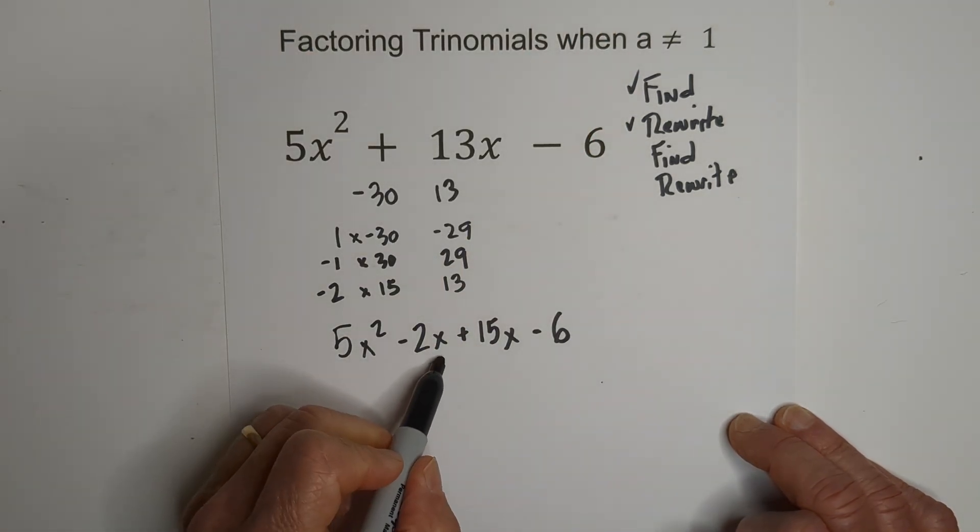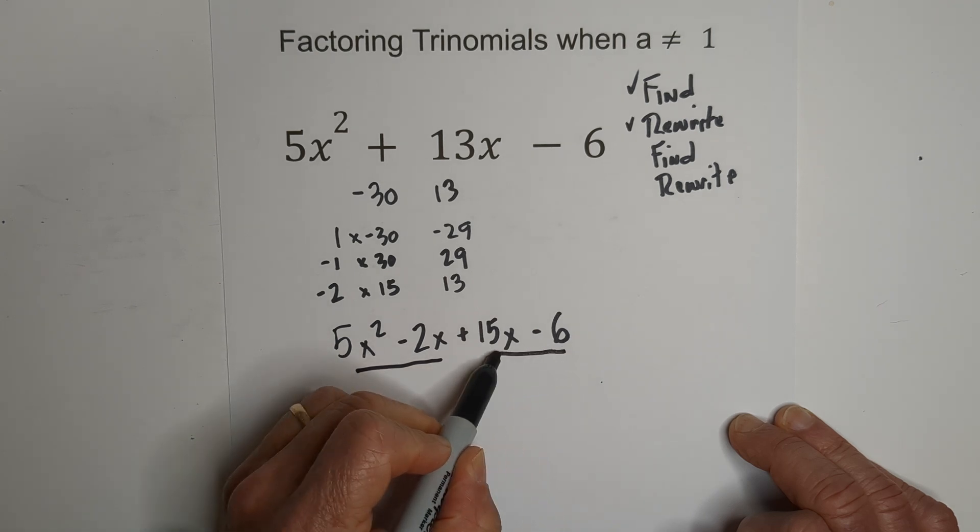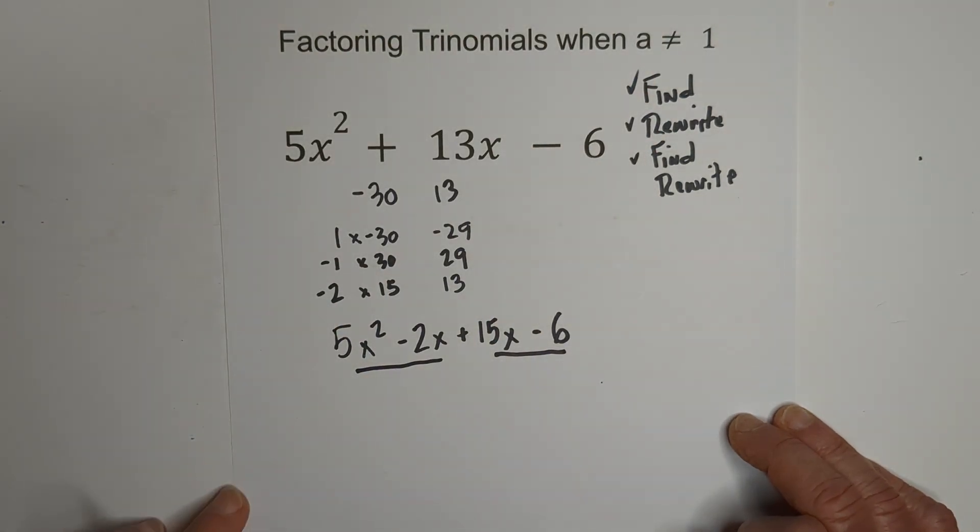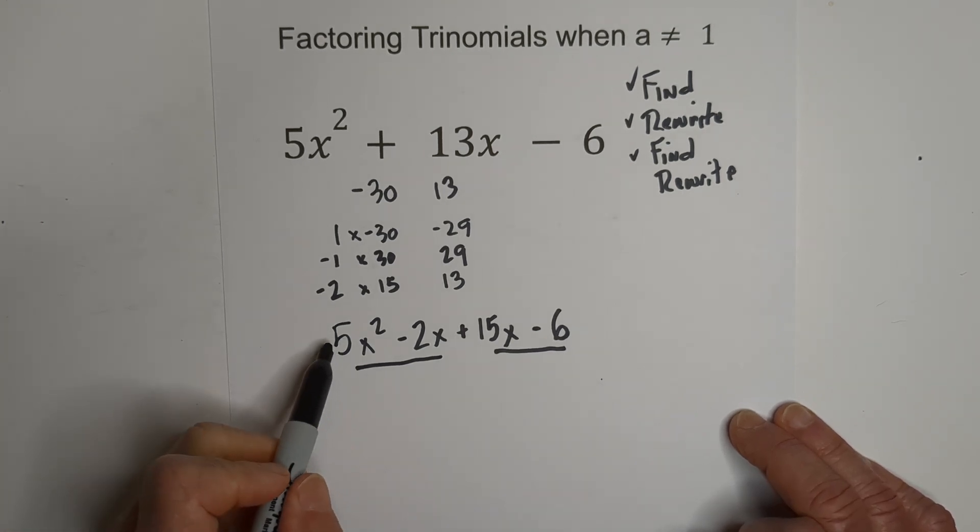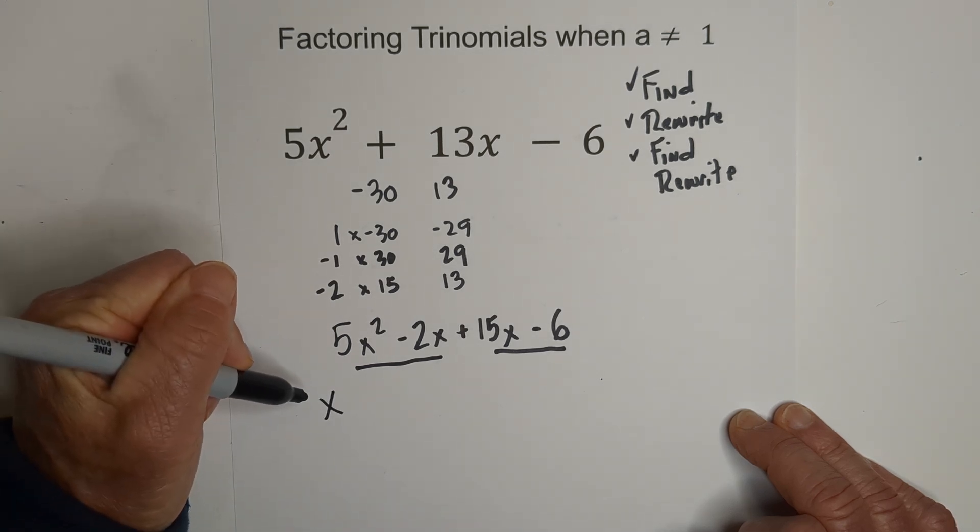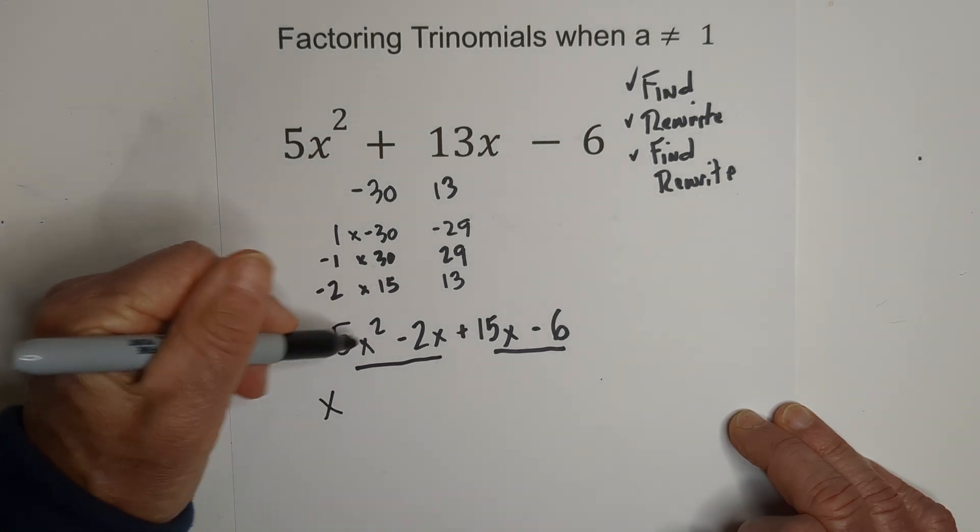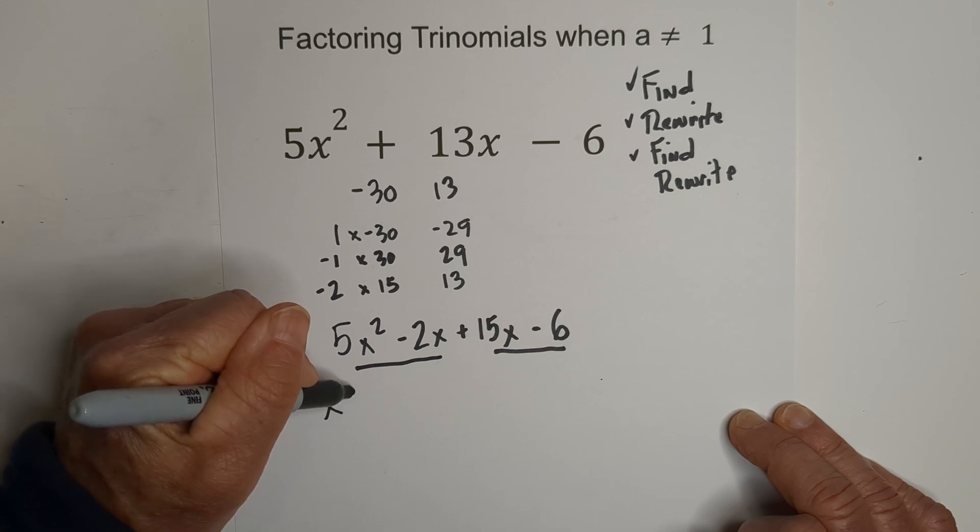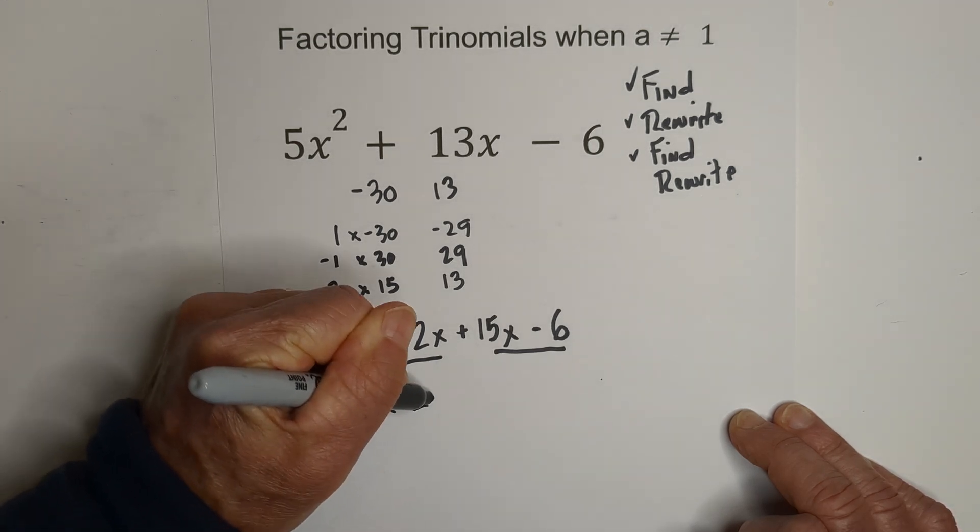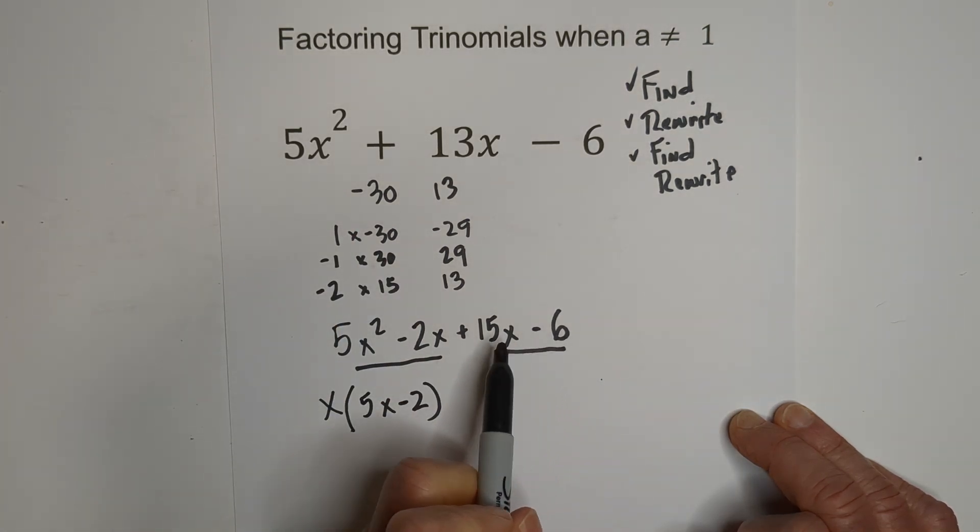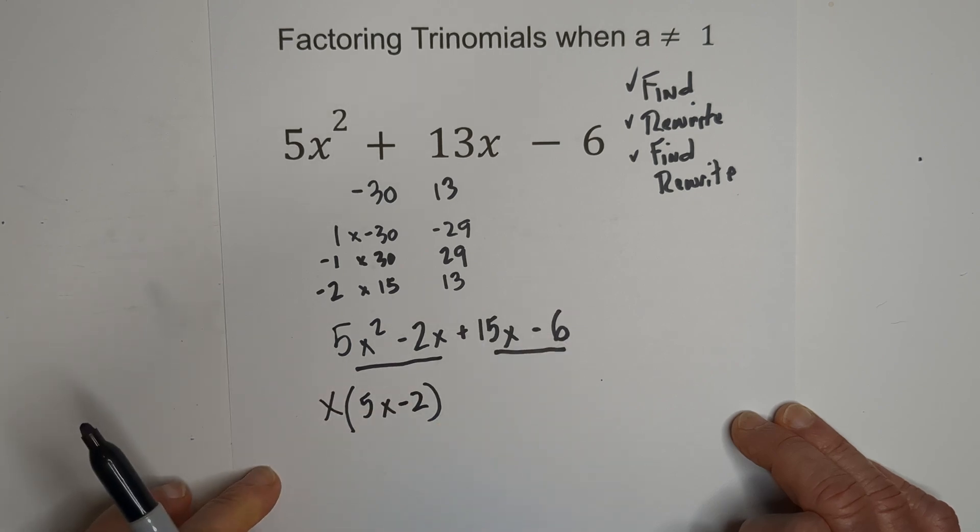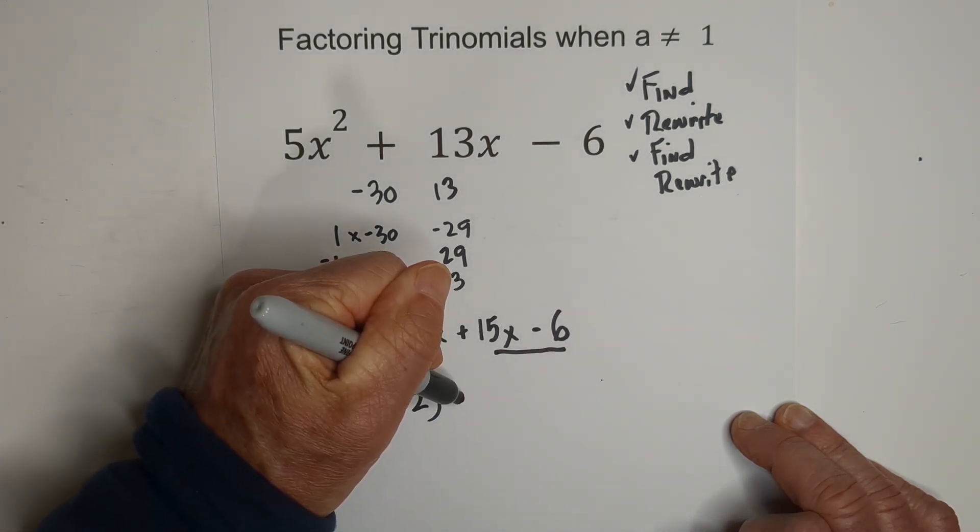Now, we have two binomials. So, what we're going to do is we're going to find, again, we are finding the greatest common factor of them. The greatest common factor of 5x squared and 2x is x. So, we're going to write that on the outside. We have x, and so we're going to factor it out. So, we have x times 5x minus 2.